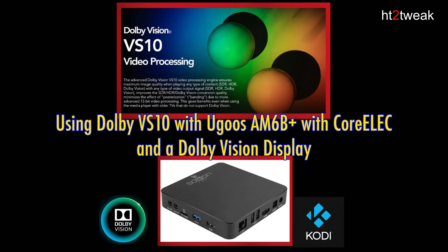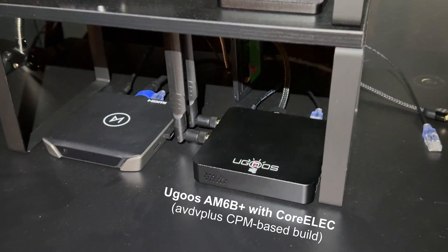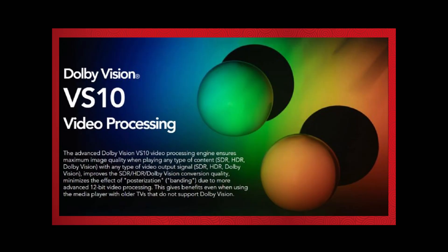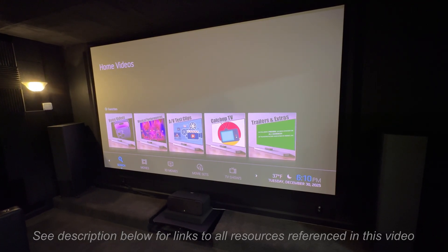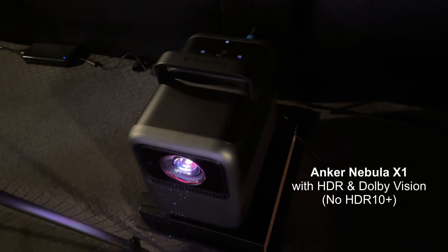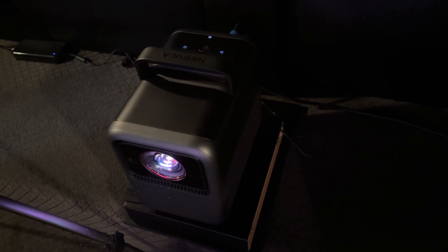Hi everyone. In this video, I'll cover the best Dolby VS10 processing settings to use with a Yugos AM6B Plus with a certain enthusiast core-like build for a Dolby Vision-capable display. VS10 can also be used for HDR and/or SDR displays, which I'll touch on briefly. I'm presently using a Nebula X1 projector, and the objective is to leverage Dolby Vision on non-DV movies and shows.